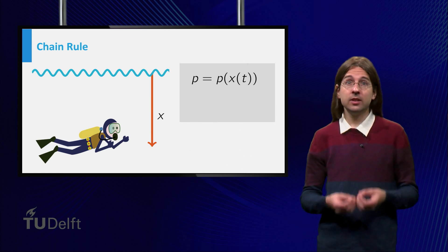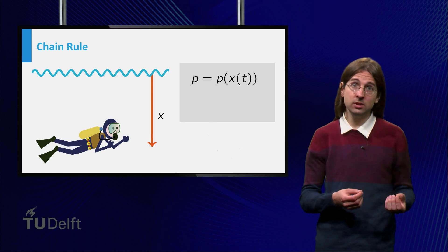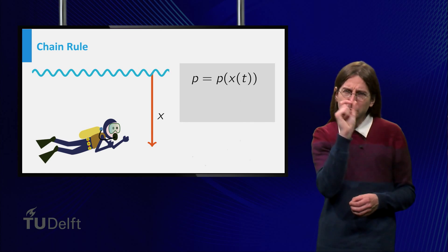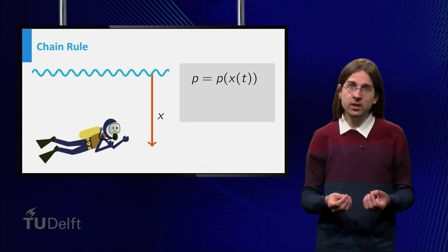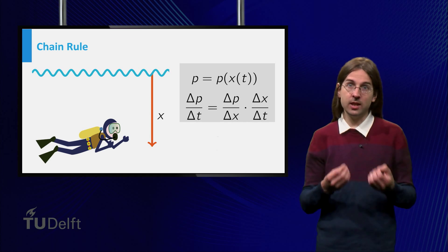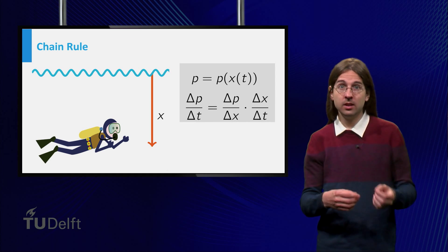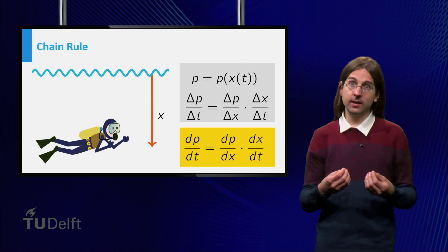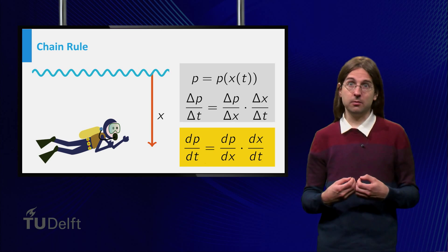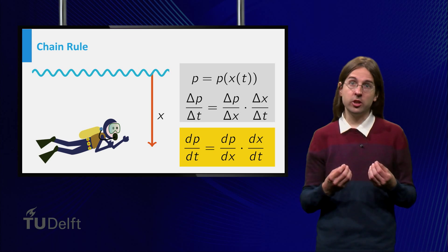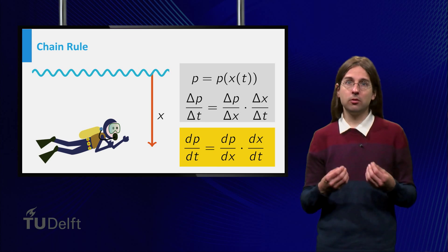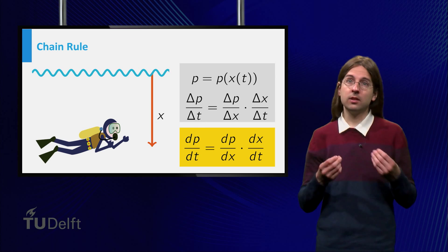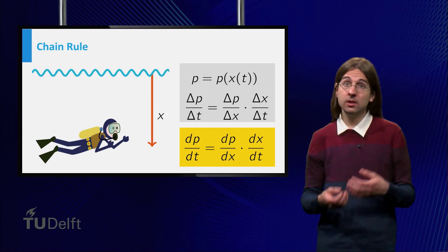Thus we are interested in the derivative of the pressure as a function of time. If we consider a short period of time delta t, then the change in pressure equals the change in pressure per meter times the change in depth in this short time. Taking the limit as delta t goes to zero, we find that the change in pressure per second equals the derivative of the pressure as a function of depth times the derivative of the depth as a function of time.